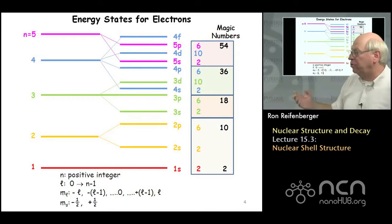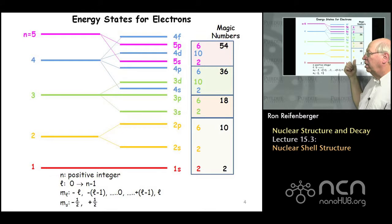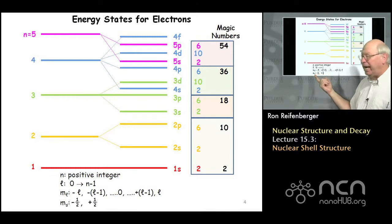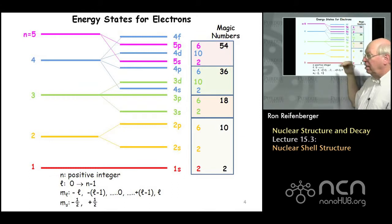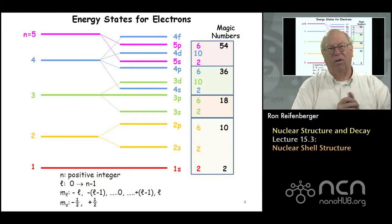From those magic numbers you can start to order the different electron states, and these different electron states are filled in a particular order that allows you to reproduce these magic numbers observed experimentally. The whole argument is driven by the four quantum numbers N, script L, M subscript L, and M sub S. By systematically varying these quantum numbers and paying attention to their allowed ranges, you produce an ordered array of energy states which reproduce the magic numbers observed in the ionization energies of all the elements in the periodic table.